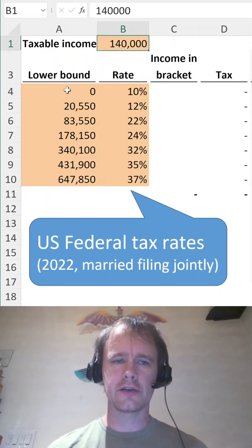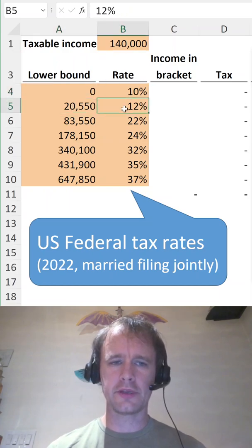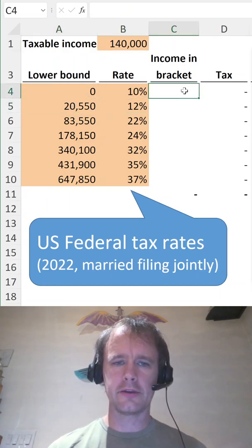Let's say you make $140,000. This is the schedule. Starting from zero, you pay 10%. From 20k, you pay 12% and so on up.